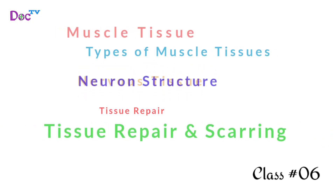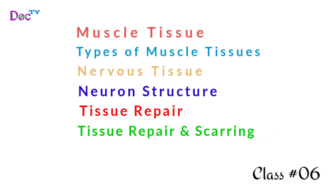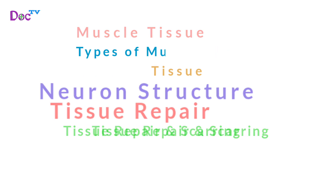In this class, we are going to learn about muscle tissue, types of muscle tissue, nervous tissue, neuron structure, tissue repair, and tissue repair and scarring.